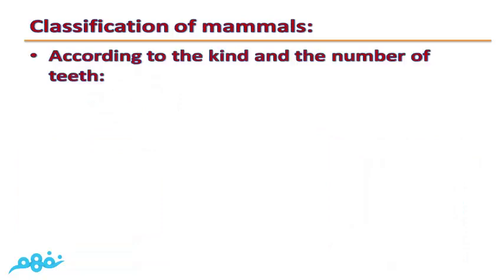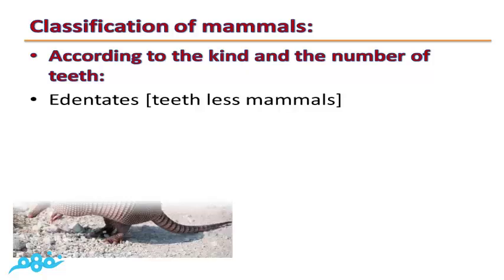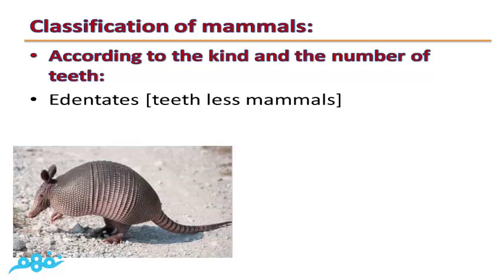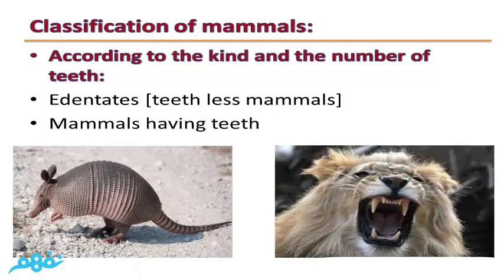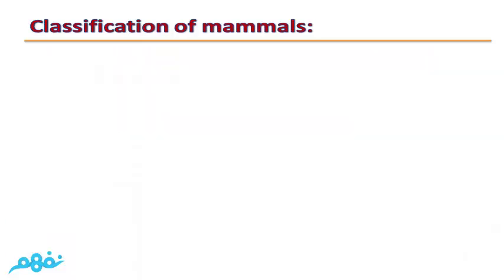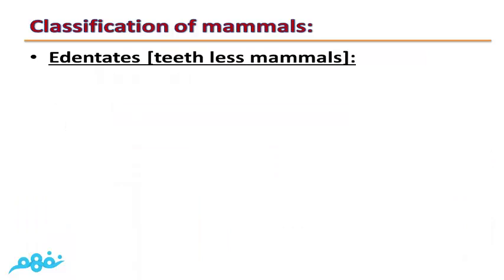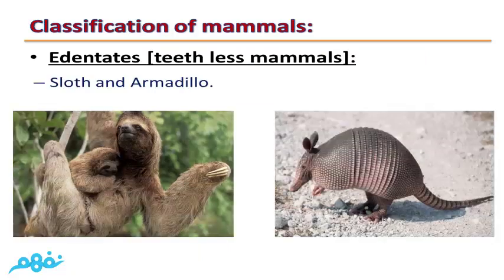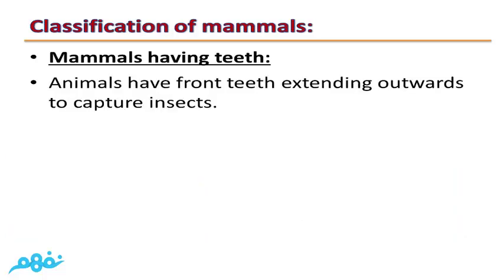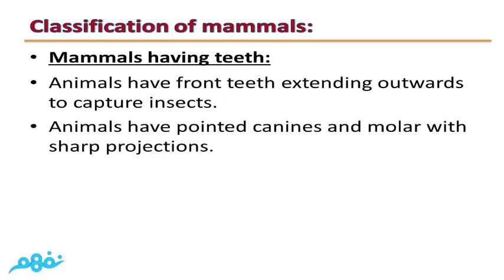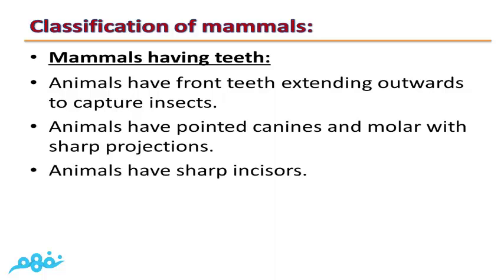Classification of mammals: Mammals can be classified according to the kind and number of teeth. Mammals are classified into edentates, or toothless mammals, and mammals having teeth. Edentates, such as sloth and armadillo, do not have teeth. Mammals with teeth are further grouped by tooth type: animals with front teeth extending outwards to capture insects, animals with pointed canines and molars with sharp projections, and animals with sharp incisors.